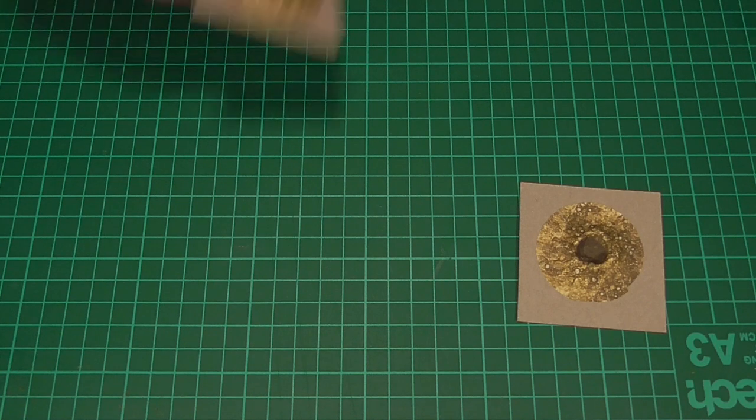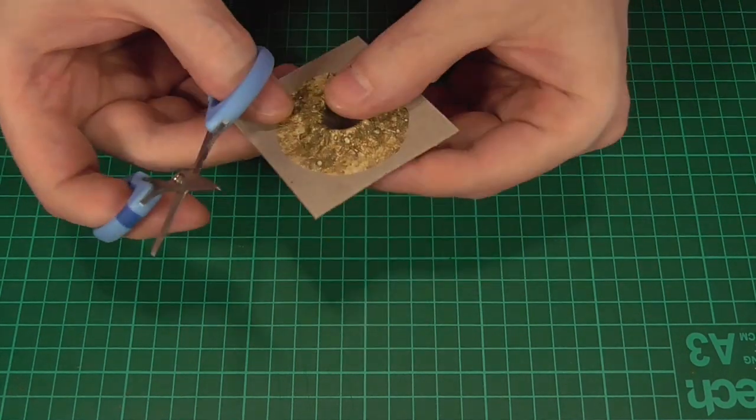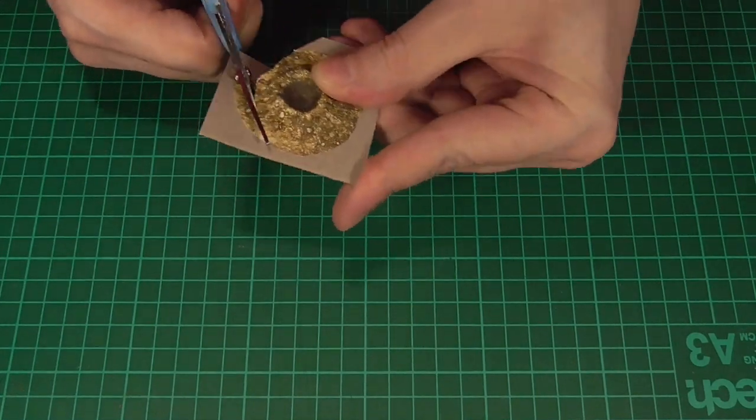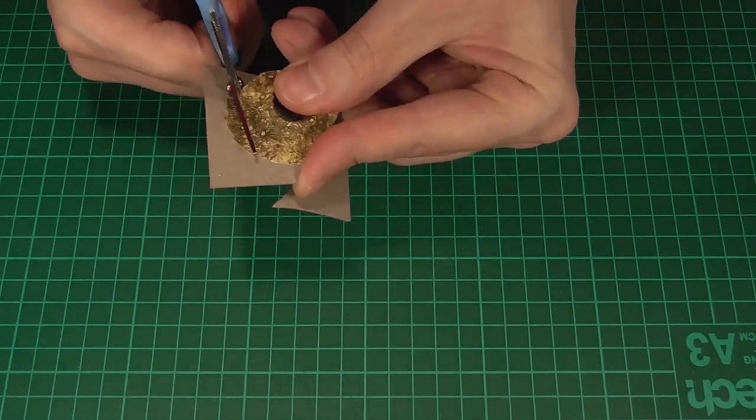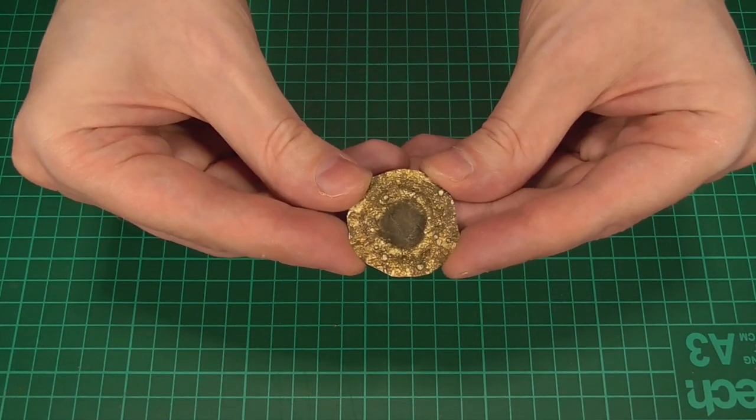And all we'll need to do now is cut that out with a sharp pair of scissors, and ideally, cut it into a slightly irregular shape. And there's the finished piece.